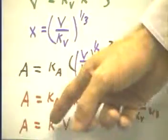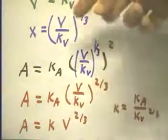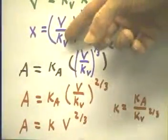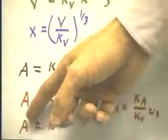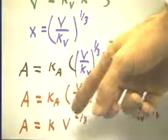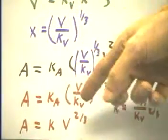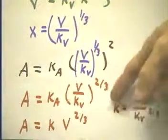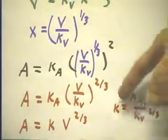And now we see what the proportionality is. A is proportional to the two-thirds power of the volume. We never knew what k_V was and we never knew what k_A was, but we know that the area is going to be some k times V to the two-thirds. k has got to be constant because k_A is constant and k_V is constant, and k is k_A over the two-thirds power of k_V.